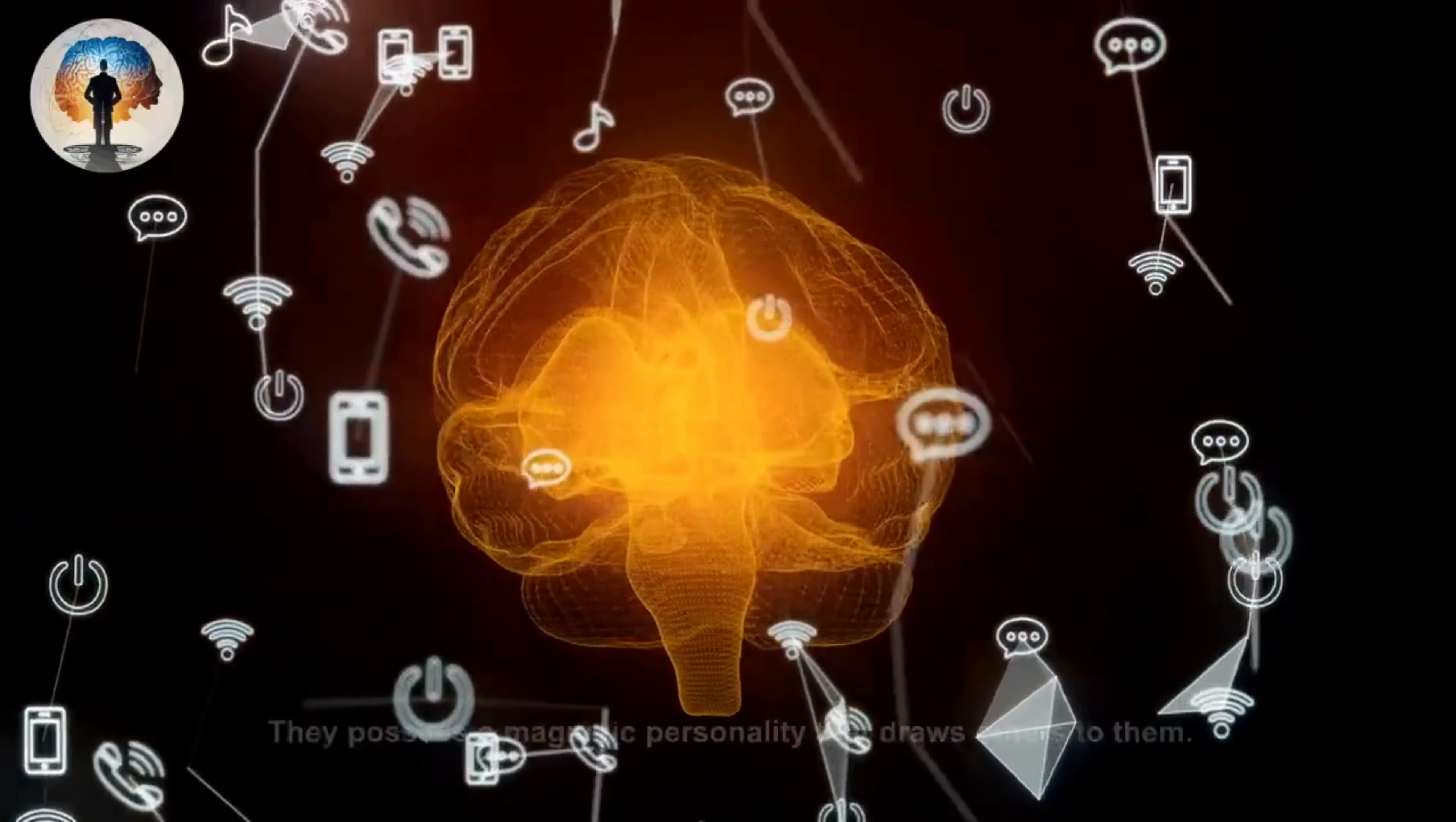Center of attention: being the center of attention is something that alphas are comfortable with. They are often the life of the party and enjoy the spotlight whether it's through storytelling, humor or simply commanding presence. Confrontational: alphas are less likely to shy away from confrontations. They are willing to assert themselves to protect their status and beliefs, even if it means engaging in disagreements or conflicts.